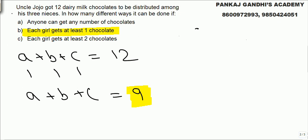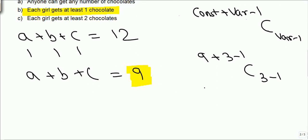So we know the standard result is standard formula constant plus variable minus one, C variable minus one. Now constant remaining is nine. Variable still three. So answer will be nine plus three minus one, C three minus one.